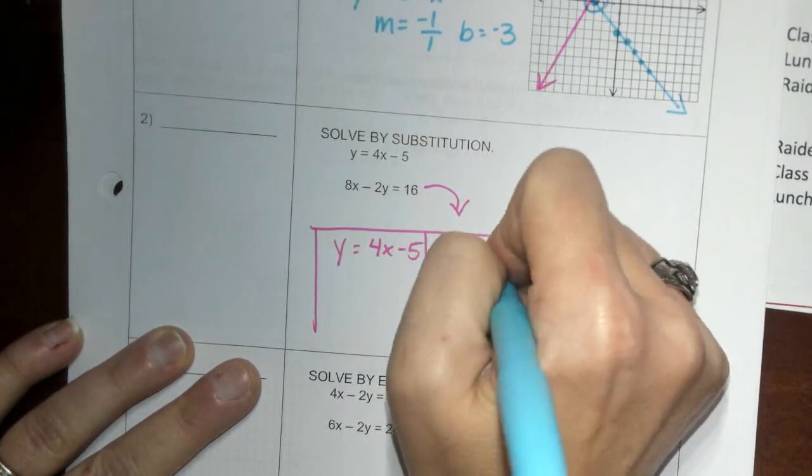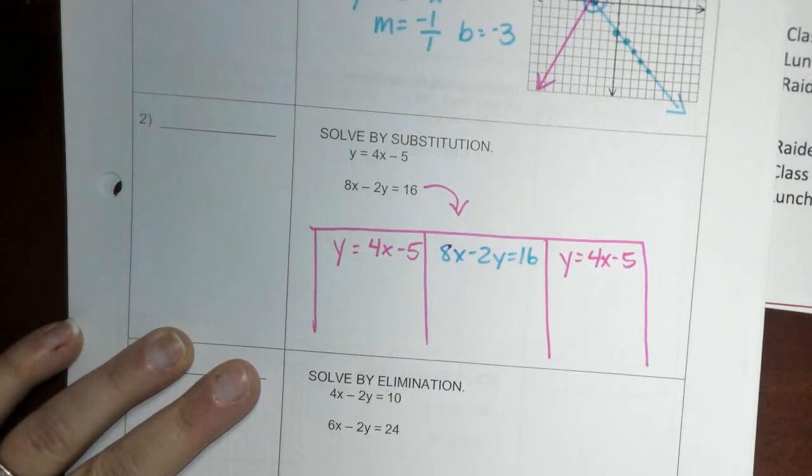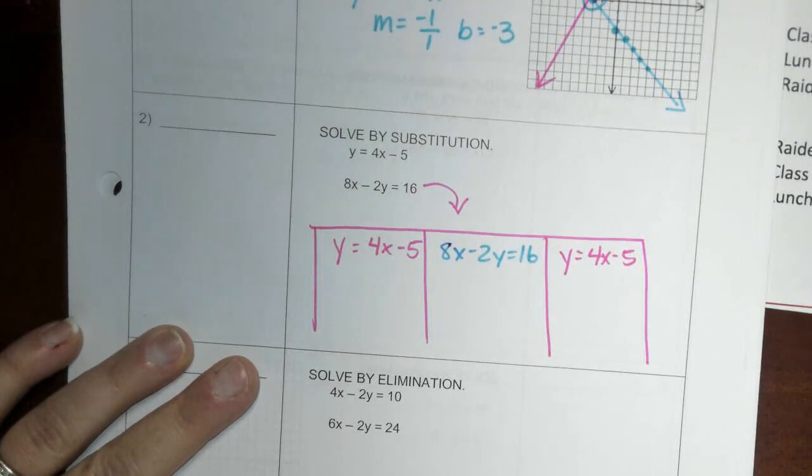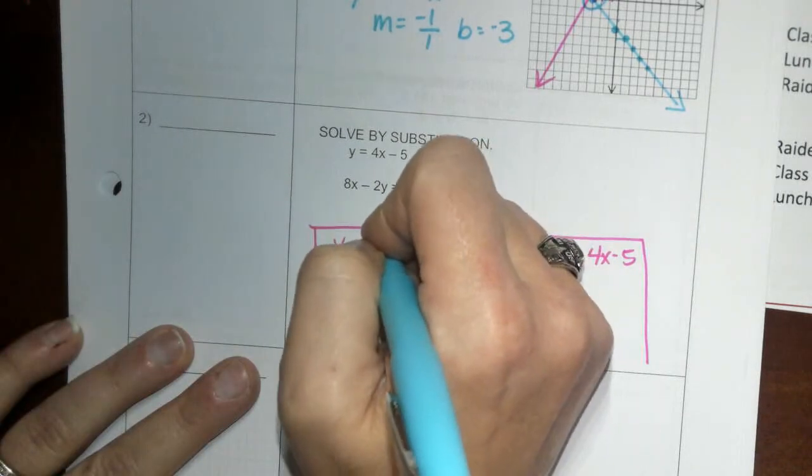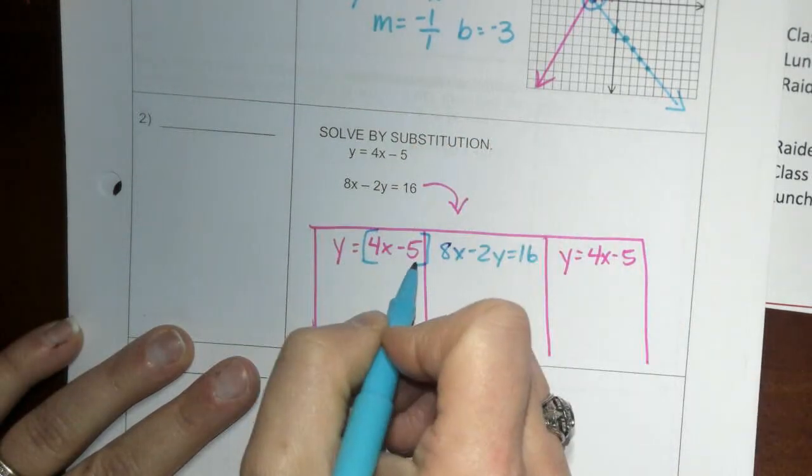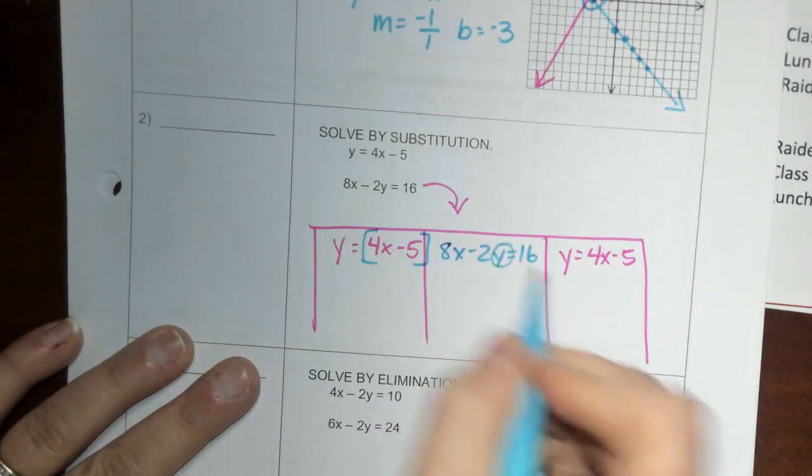And we put this one in the middle: 8x minus 2y equals 16. So we are going to see that the y, we're going to put 4x minus 5 everywhere we see a y.